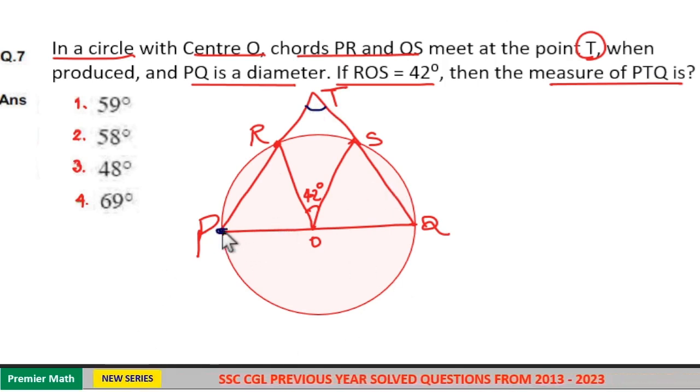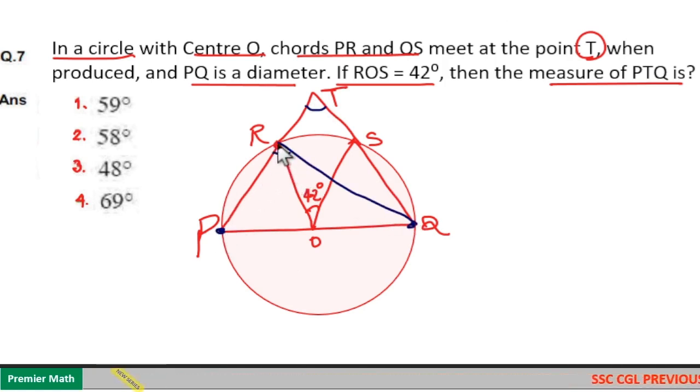Now, this is the diameter and the diameter creates 90 degrees with the circumference. That is 90 degrees at any point of the circumference. So this is also 90 degrees.